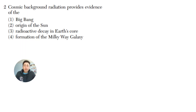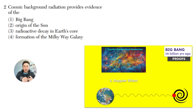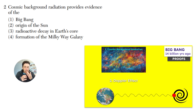Question two: cosmic background radiation provides evidence of the what? Cosmic background radiation is proof for the Big Bang. The Big Bang is how the universe started — everything we see in the universe today was in a very, very small dot, and that dot then exploded out in all directions. How do we know that this small dot exploded 14 billion years ago? One proof is cosmic background radiation — if you look in the background of the universe, there's a lot of radiation throughout.